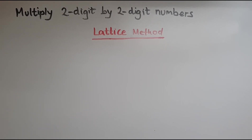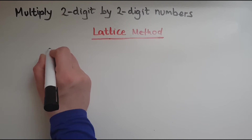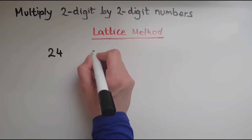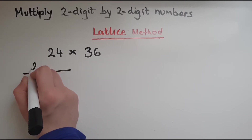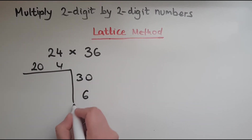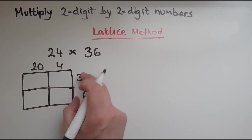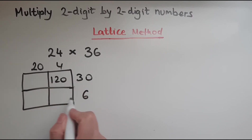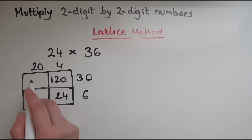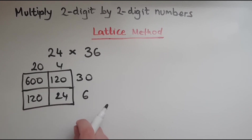In this video we'll use the lattice method. The lattice method is very similar to the grid method. Let's say we want to multiply 24 by 36. With the grid method we do 20 and 4 times 30 and 6. Creating a 2-by-2 grid: 4 lots of 30 is 120, 4 lots of 6 is 24, 6 lots of 20 is 120, and 20 lots of 30 is 600. Altogether: 600 + 120 + 120 + 24 = 864.